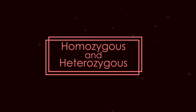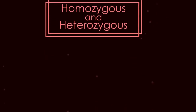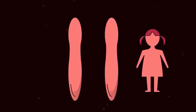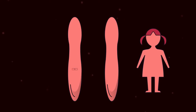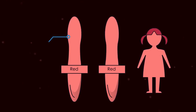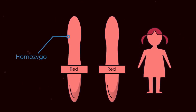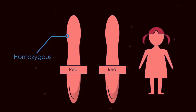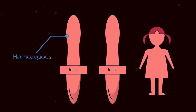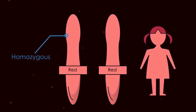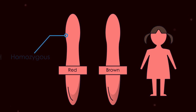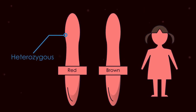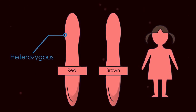The genotype is the set of genes in our DNA which are responsible for the phenotype. Alternative forms of a given gene are called alleles. When an individual has two of the same allele — so both coding for red hair — they are homozygous; both genes are identical. Whereas, if one allele codes for red hair and the other one for brown hair, then they are heterozygous — two different forms of the same gene are present.